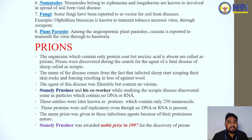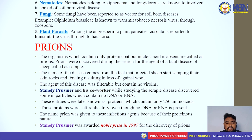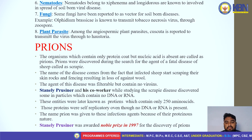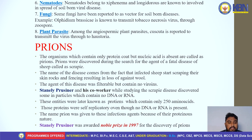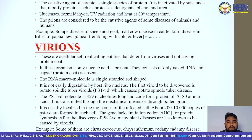Stanley Prusiner and his co-workers, while studying scrapie disease, discovered small particles which contained no DNA or RNA. These entities were later known as prions, which contain only 250 amino acids. Those proteins were self-replicating even though no DNA or RNA is present. The name prion was given to the infectious agent because of their proteinous nature.